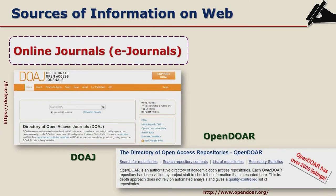There are online journals available on the net and there are directories of these journals. This is a snapshot of DOAJ — the Directory of Open Access Journals — which gives you information on journals available in open access that are free of charge.